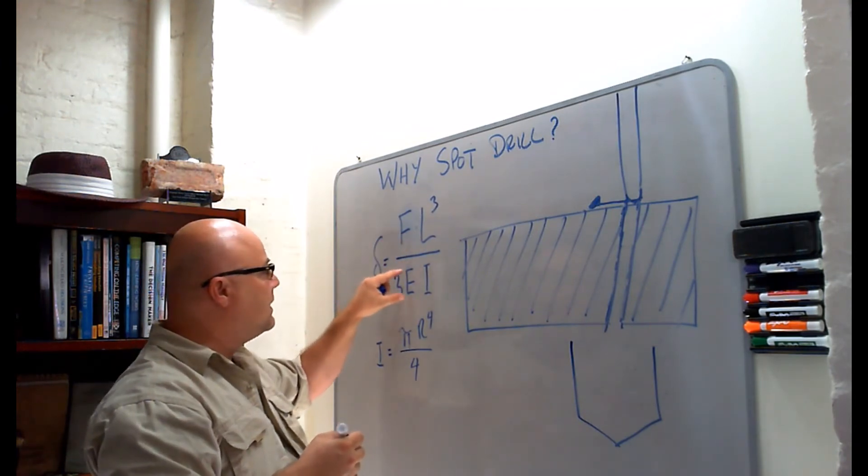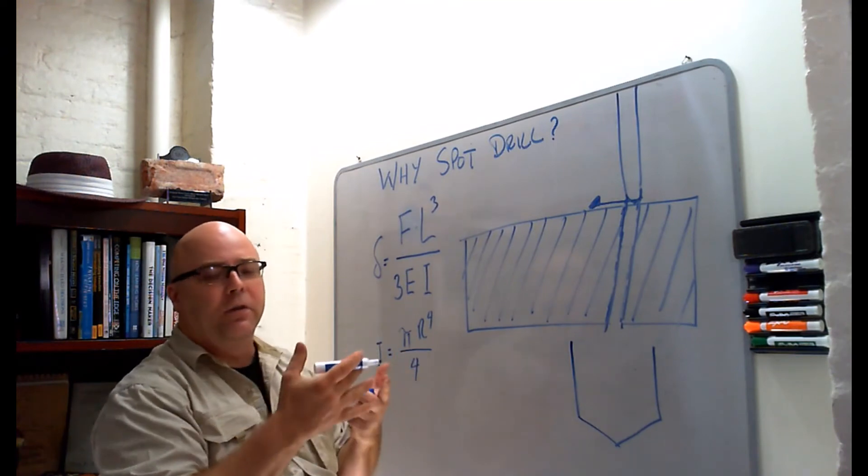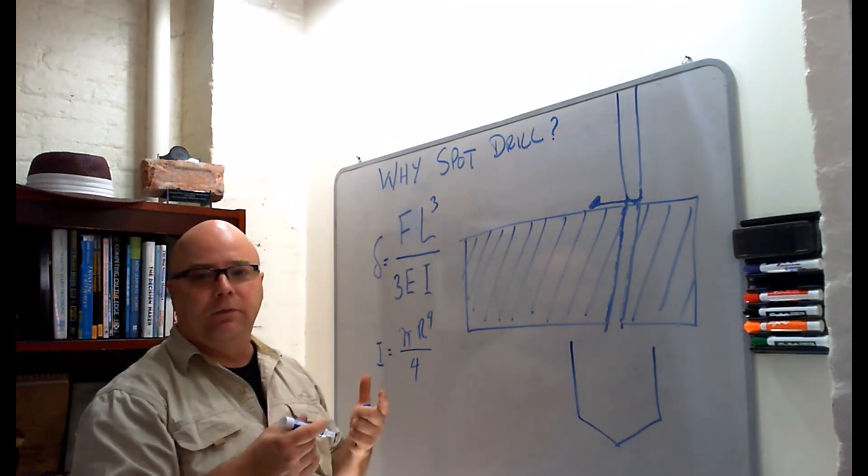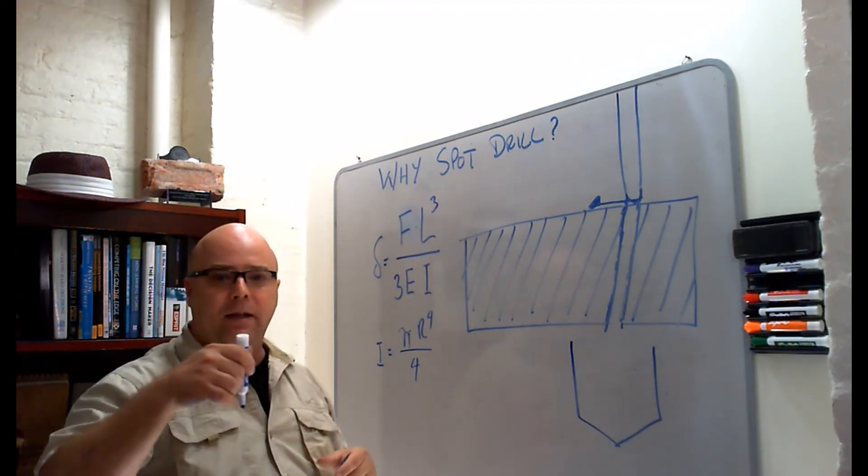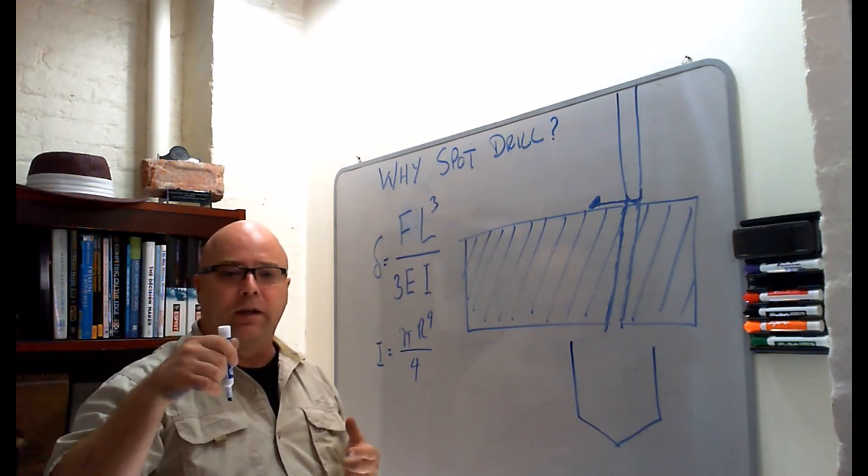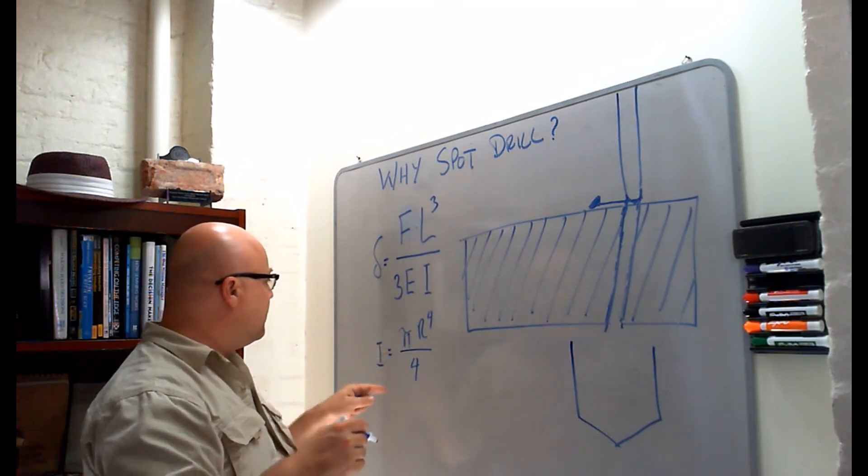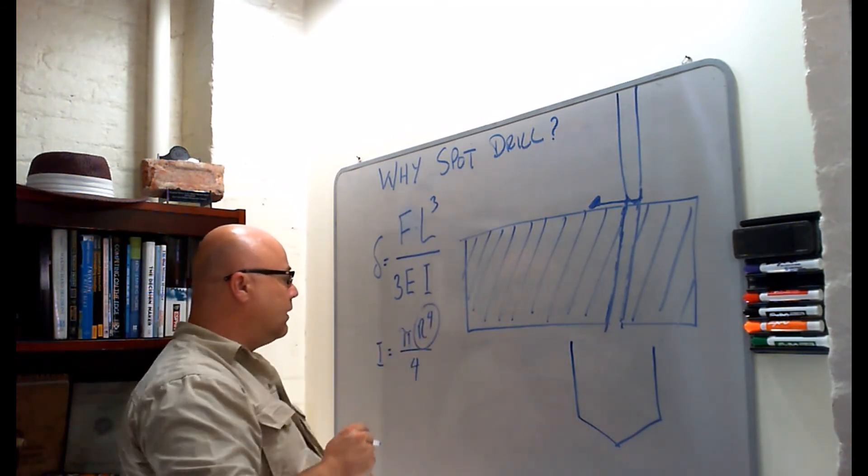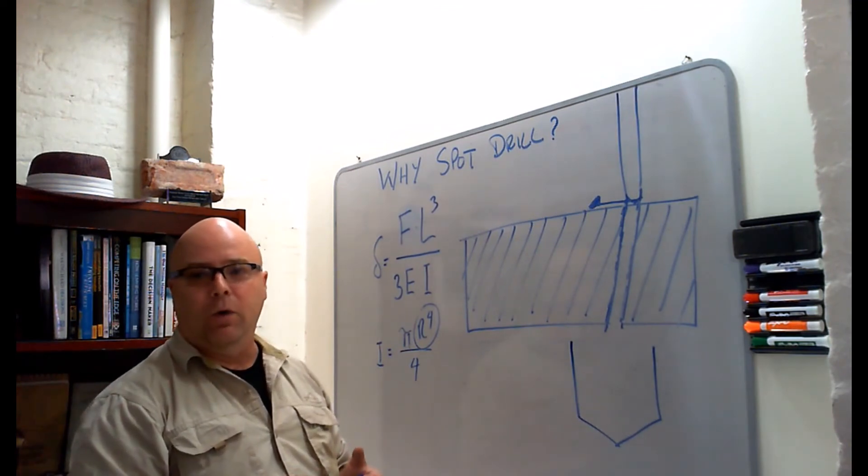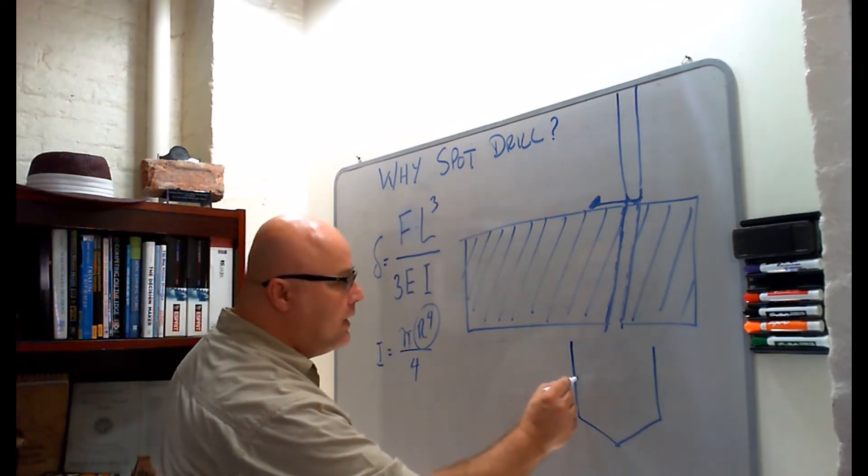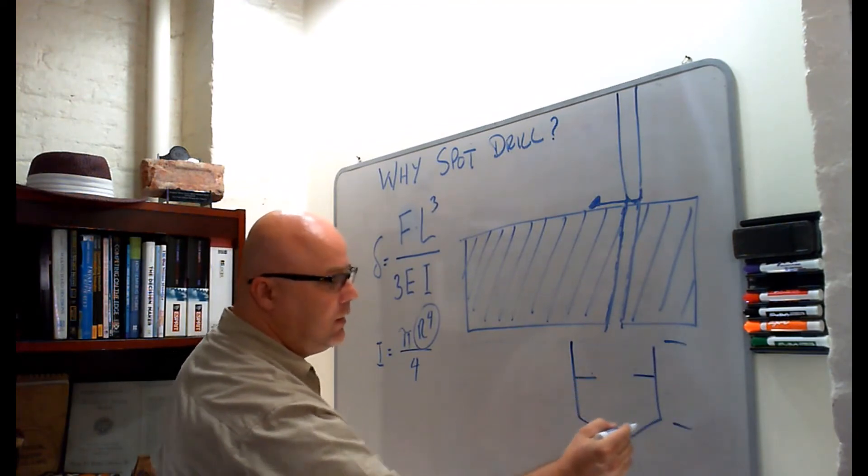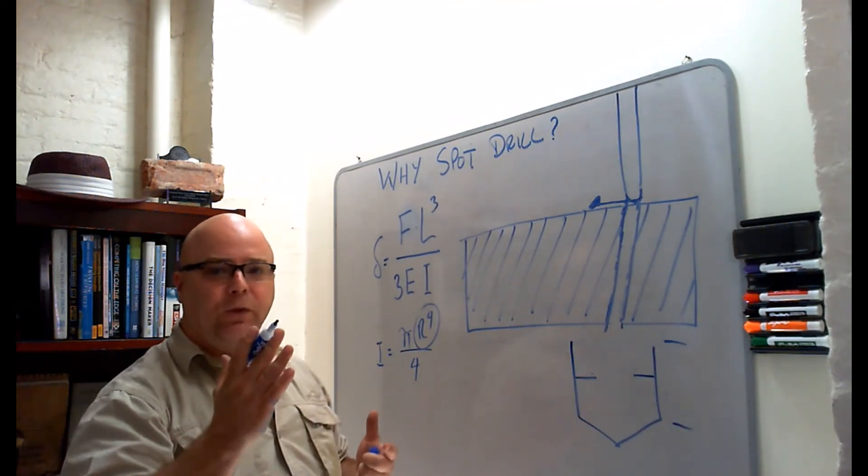And that's divided by three times the elastic modulus of the material that the drill is made out of, times the area moment of inertia for the drill, which we can approximate as the area moment of inertia for a rod, a solid rod. And area moment of inertia for the rod depends on pi times the radius to the fourth power divided by four. So the bigger this dimension is compared to this dimension, the less deflection that you're going to get.